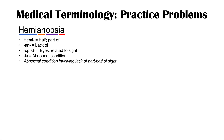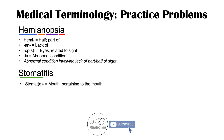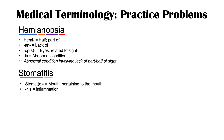We can see this in conditions like bitemporal hemianopsia, where there are field cuts. The next medical terminology problem is stomatitis. If we break it down, the prefix stomat or stomato means mouth or pertaining to the mouth, and the suffix itis means inflammation. So stomatitis simply means inflammation of the mouth.